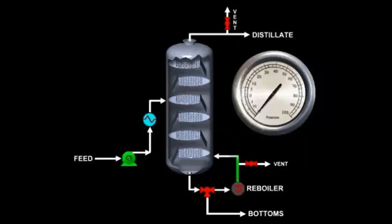When bringing the column back to atmospheric, open the line at the base of the column to allow the incoming vapor to enter the column.